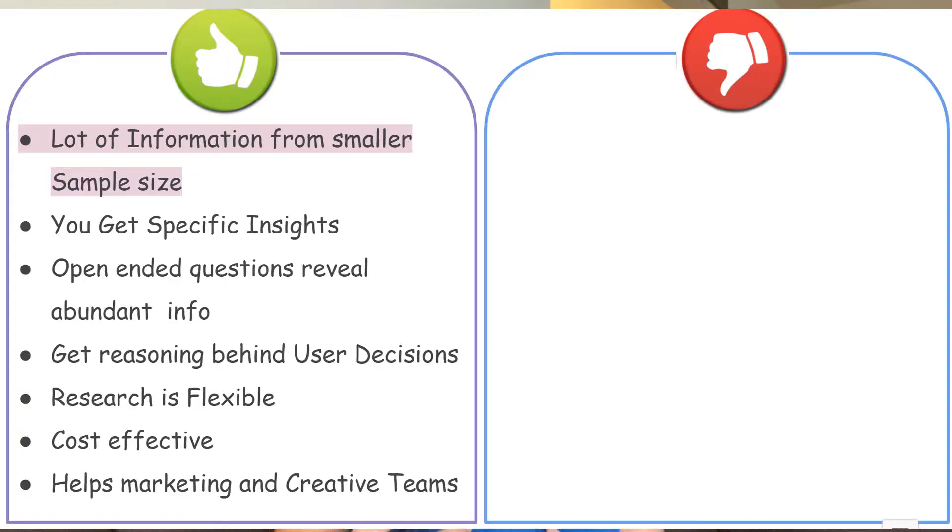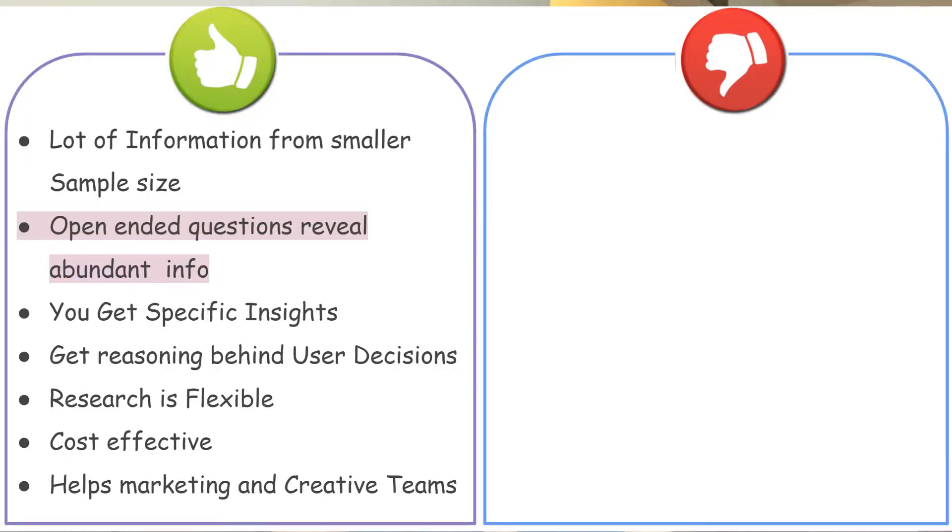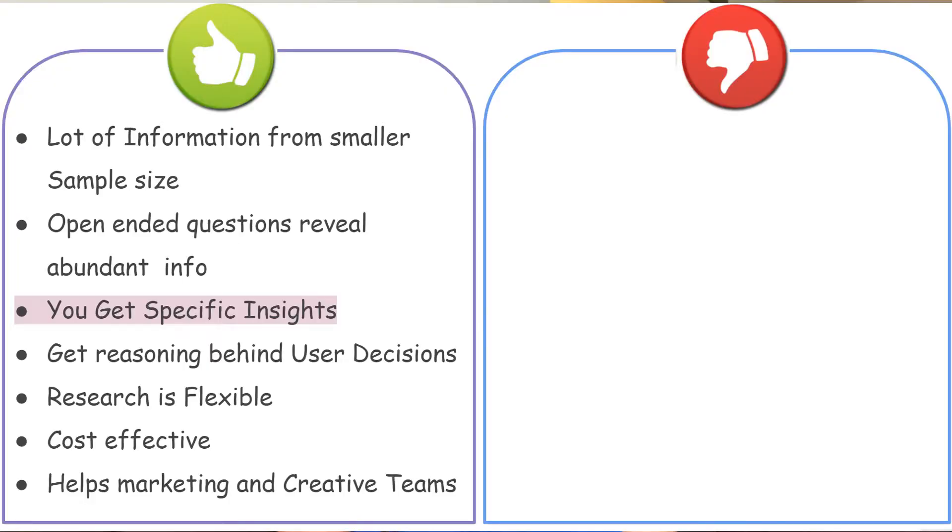The first advantage of qualitative research is that it requires only a smaller sample size. Nielsen suggests having only five participants for qualitative research interviews. Open-ended questions reveal abundant information since you don't ask closed-ended questions that stop at yes or no. Qualitative research is an exploratory kind of research that depends on exploring user views and behavior to get abundant information.